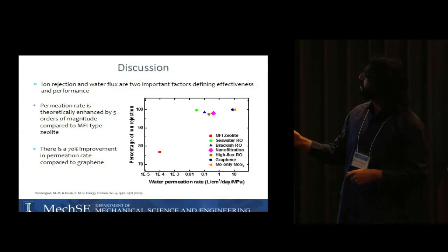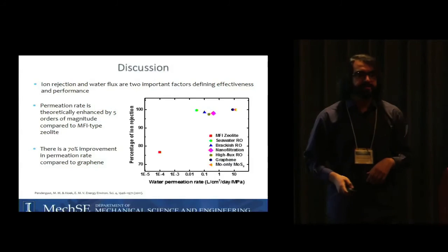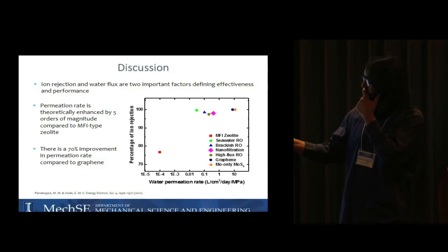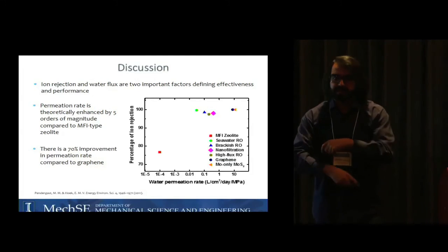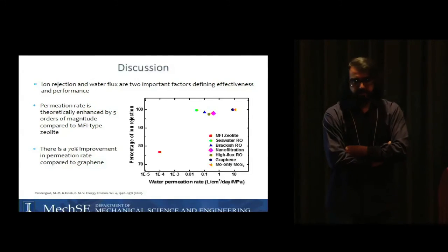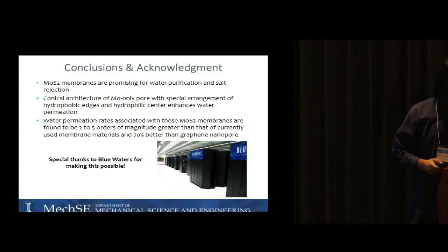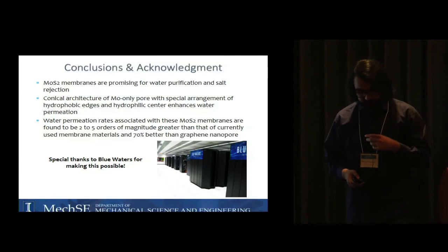As you can see, using graphene we can have several orders of magnitude higher water permeation rate. That's a log scale so the difference you might not see quite well. Even for graphene there's a 70 percent improvement when we use MoS2 compared to graphene.